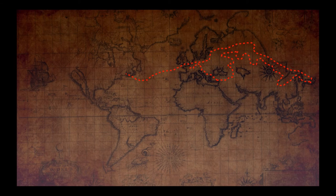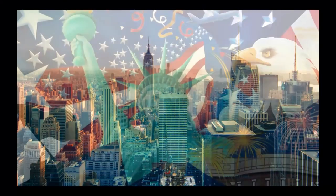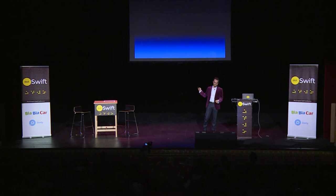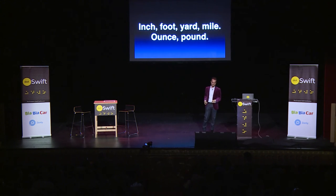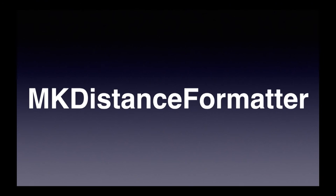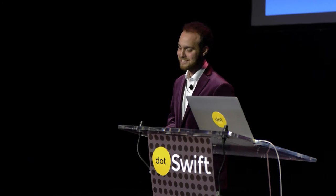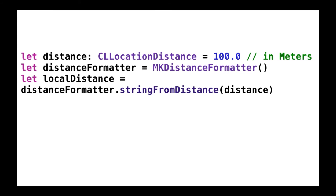Now we're going to the US — New York, America, Steve. We're going to talk about distance and weights. Americans have their inch, foot, yard, mile, ounce, and pound. For distance, Apple wants you to use MKDistanceFormatter, which is hidden in MapKit. You create a CLLocationDistance — a double that takes the distance in meters — pass it to MKDistanceFormatter, and it formats it to the locale. There are some options to change locale and do other things. In the US you'll get '350 feet'.